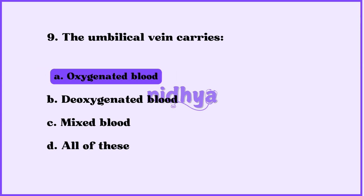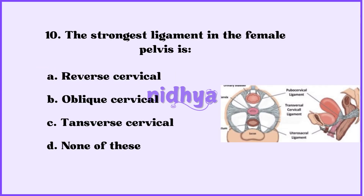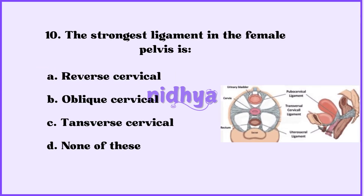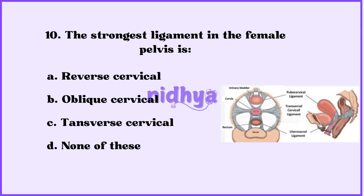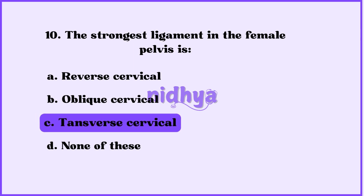Tenth question: The strongest ligament in the female pelvis is — reverse cervical, oblique cervical, transverse cervical, or none of these? The answer is transverse cervical.